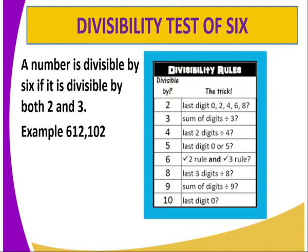The number should be divisible by both 2 and 3. You might find a number that is divisible by 2 but not divisible by 3 — so you rule out, and that means it is not divisible by 6. A number is divisible by 2 if the last digit is an even number. A number is divisible by 3 if the sum of each digit is divisible by 3. That is when you shall know when a number is divisible by 6.